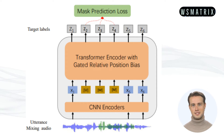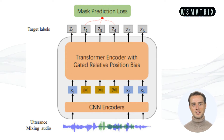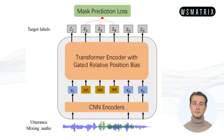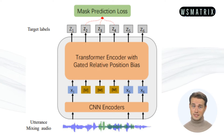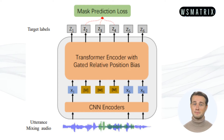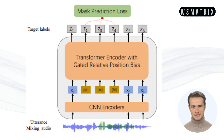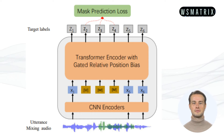Fifth, it has an efficient training algorithm. WAV-LM is trained using an efficient training algorithm. This allows the model to be trained on a large dataset in a reasonable amount of time. WAV-LM has been shown to achieve state-of-the-art results on a variety of speech processing tasks. It is likely to be used in a variety of applications, such as voice assistants, speech-to-text software, and machine translation systems.